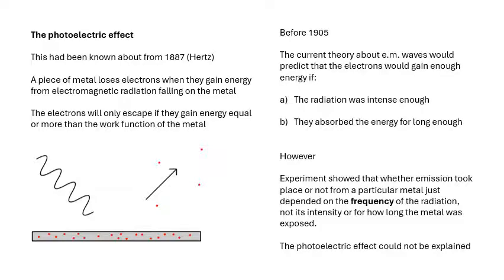The wave theory at the time would have predicted that electrons could escape if the radiation was intense enough — very bright light — or if they had enough time to absorb the energy. However, that prediction was wrong. It turned out that the only factor determining whether electrons could escape was the frequency of the radiation, not its intensity.